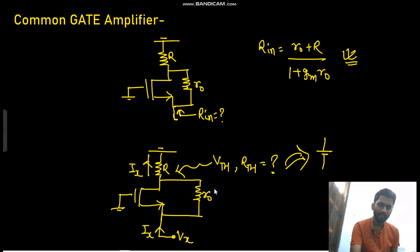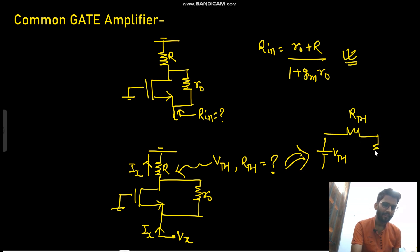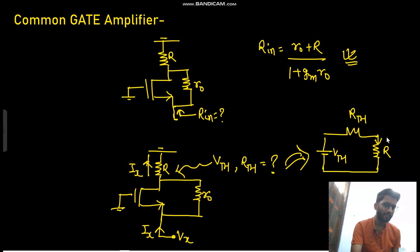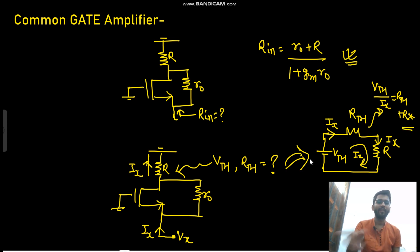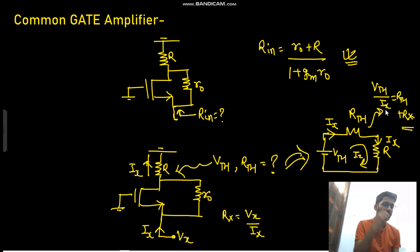What you can do is find Vth and Rth of the network. You replace that network with Vth and Rth, along with load R. Since Ix is flowing in the load, the same Ix flows through Rth and Vth as well. From this you can write: Vth / Ix = Rth + Rx, and since Rx = Vx / Ix, you can find the relation between Vx and Ix.